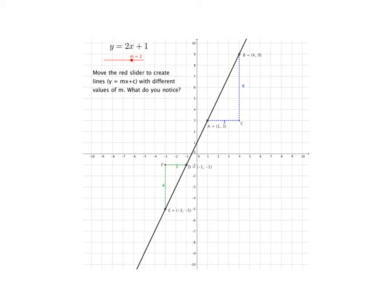So here you can see that to get from A to B you've gone along three steps but you've gone up six steps, and the ratio of that is going to be 6 over 3 which equals 2. And that is your gradient.